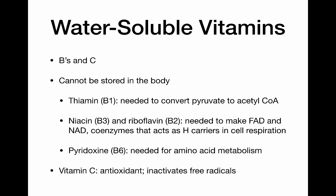Niacin, which is B3, and riboflavin, which is B2, are needed to make our electron transporters — remember FAD and NAD? NAD comes from niacin (B3) and FAD comes from riboflavin (B2). Those coenzymes were our electron and hydrogen carriers — our electron shuttles. They act as electron carriers in cellular respiration, and they are really important. They're loaded up in both glycolysis and in the Krebs cycle, and their job is to shuttle those electrons to the final step — oxidative phosphorylation — where we make the predominant amount of our energy.